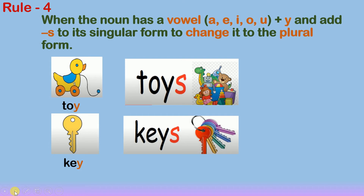There are many more examples, like monkey becomes monkeys. So whenever a noun ends with letter Y, we must check the letter before Y — whether it is a consonant or a vowel. If there is a consonant before Y, drop Y and add IES. But if there is a vowel before Y, don't drop Y — just add S.